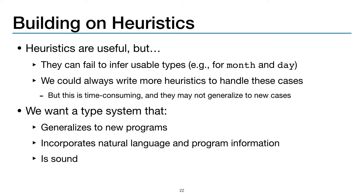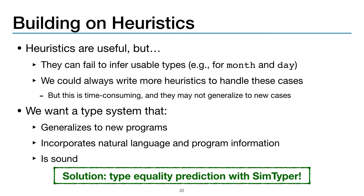So heuristics are useful, but they can sometimes fail to infer usable types, like they did for the parameters month and day. While we could always write more heuristic rules to handle cases like these, this process is time-consuming and these new rules may not generalize to new cases and new programs. So we want a type system that generalizes to new programs, incorporates both natural language and program information, and is sound. Our solution is to use type equality prediction with SimTyper.